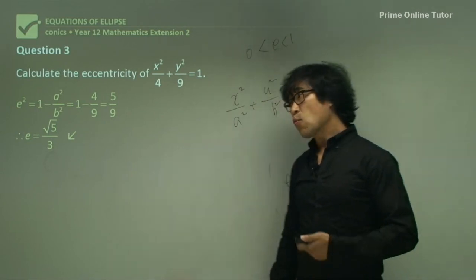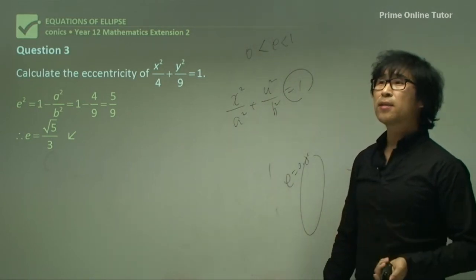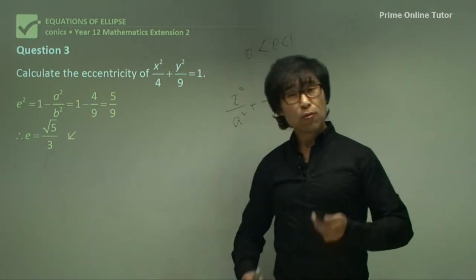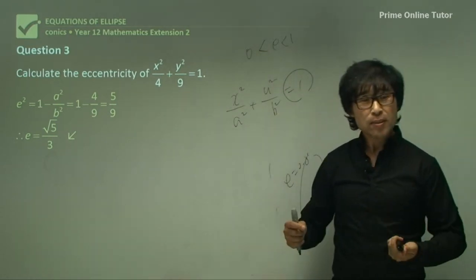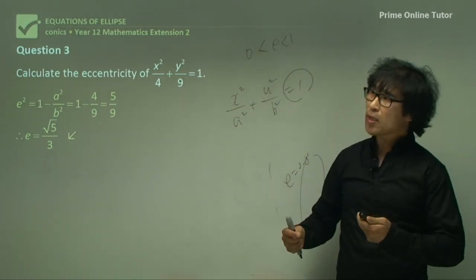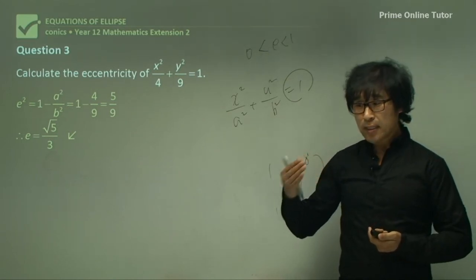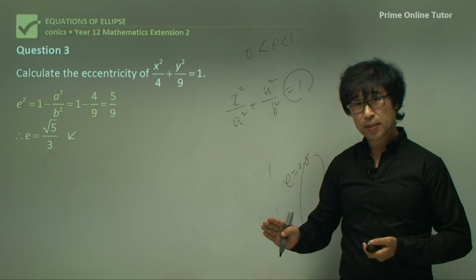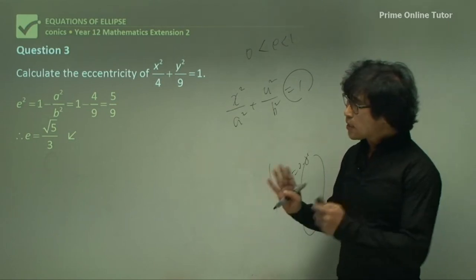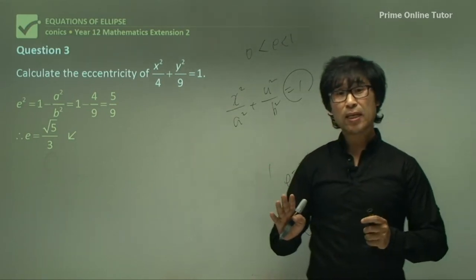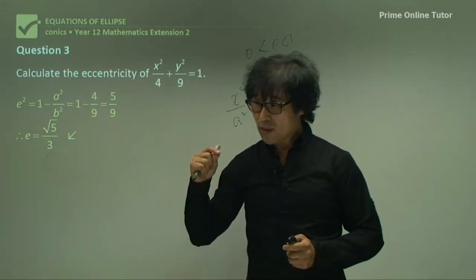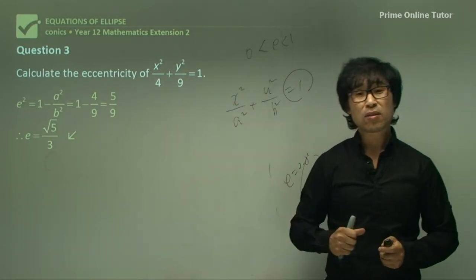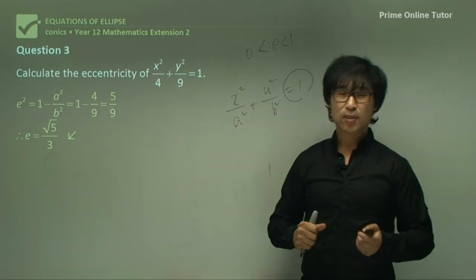So we've learned the basic understanding of conics, how to make an ellipse, and what eccentricity is for an ellipse. That's the very basic understanding of the ellipse. That's the end of this particular lesson — we'll see you at the next lesson where we'll cover a little more.